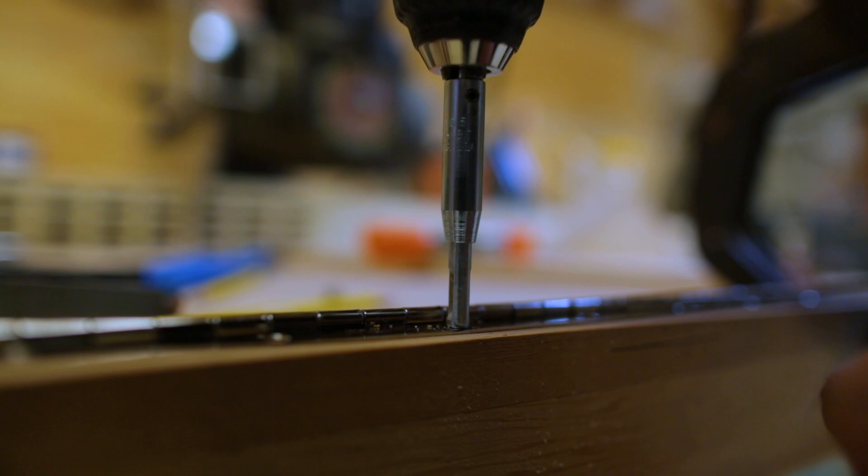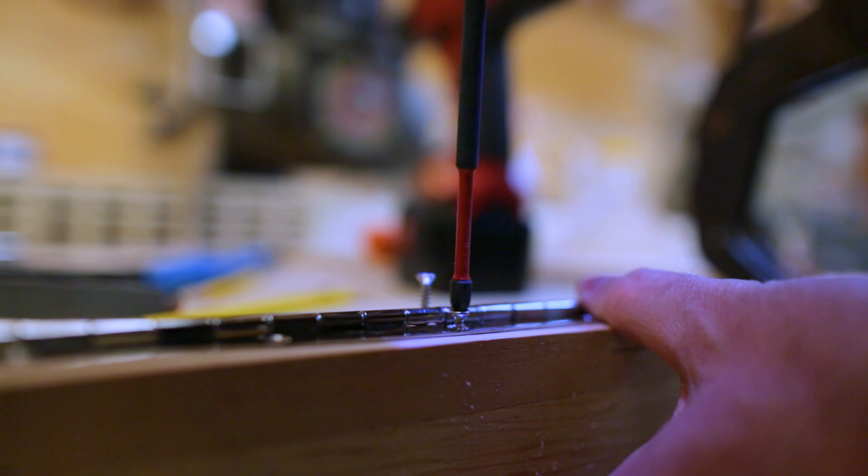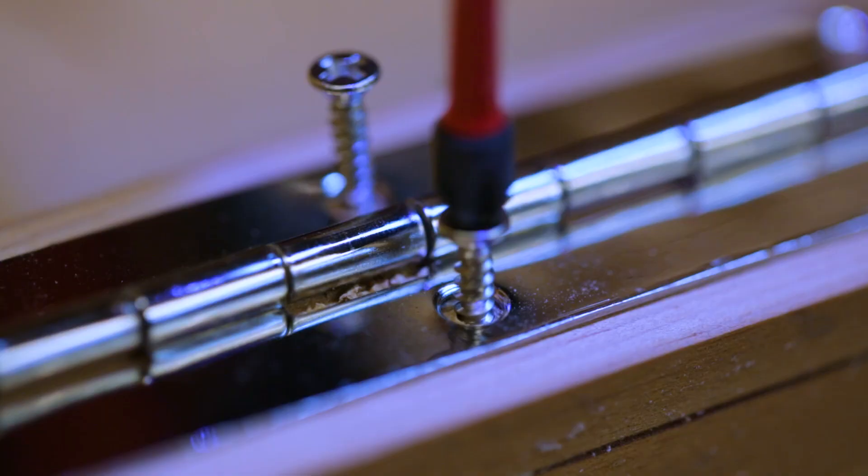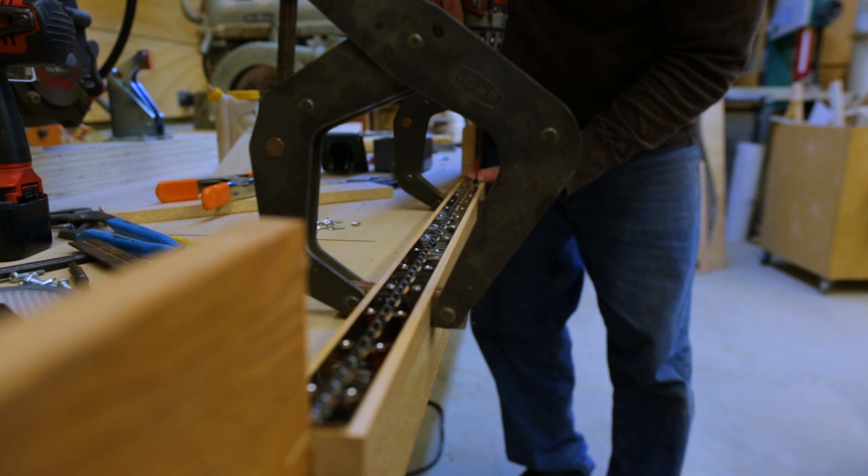Now I had done a project a while back where I was centering screws in some brackets. And someone had mentioned a VIX bit, I think that's what it's called, which I ended up getting. And they're super helpful for centering a hole in a hinge hole. There's no guesswork. You just put it in place and drill your hole.